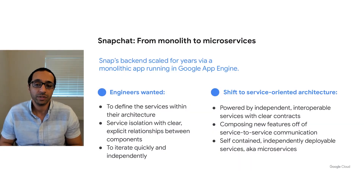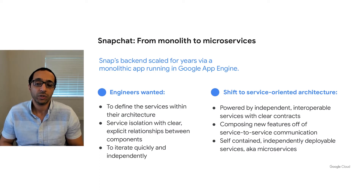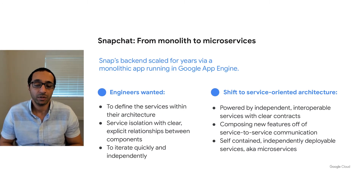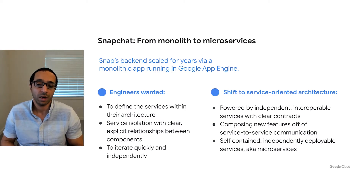Thanks, Andres. So I'm going to be talking about our journey from monolith to microservices. Snapchat started as a monolith app running in Google App Engine, which allowed us to reach millions of users very quickly and iterate over product features quickly. However, as the scale grew, scaling the infrastructure and the team became very challenging. Changing data models became very difficult because of the dependencies between different services in the same data store.